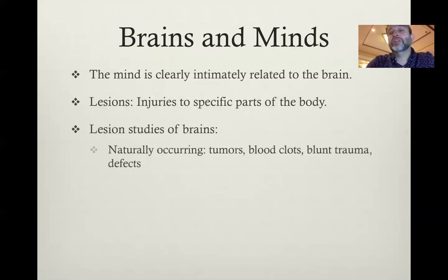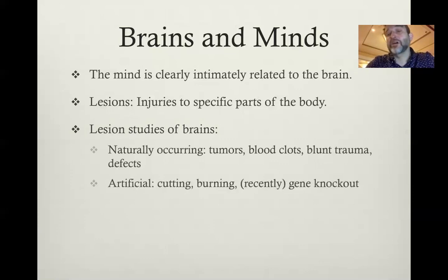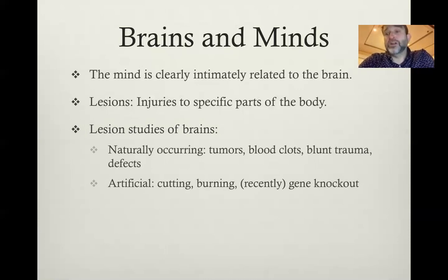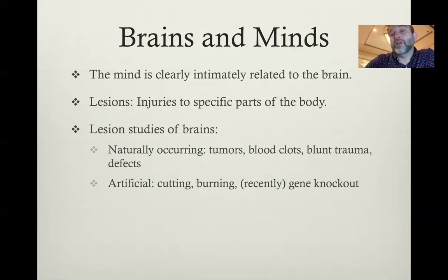Lesion studies of the brain are caused by naturally occurring damages such as tumors, blood clots, blood trauma, defects, or strokes. In animals, we may do lesion studies by artificially cutting, burning, or in recent studies using gene knockout to cause parts of the brain not to develop.